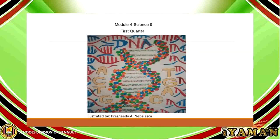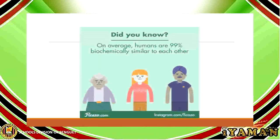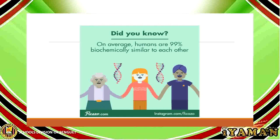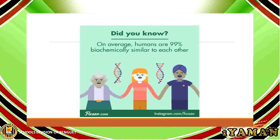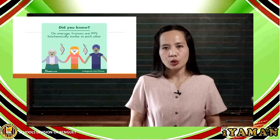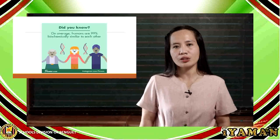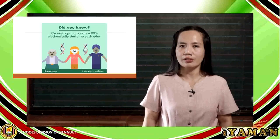Did you know that on average, humans are 99% biochemically similar to each other? This is because of what we call the DNA. There are still other trivia presented in your printed modules, so read and be amazed.